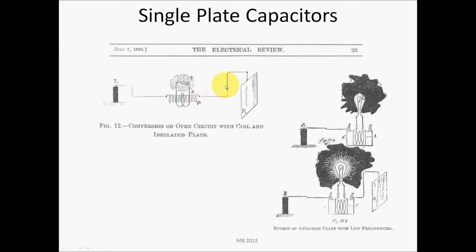The currents flow from the high-frequency power source through the coil and then they flow out into the plate, this plate capacitor, and they flow back through the coil. So this single plate capacitor acts as a reservoir for the charge to flow.